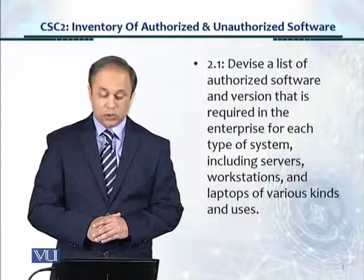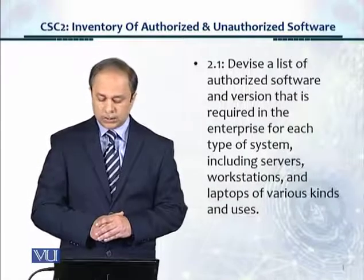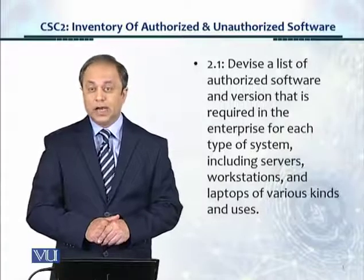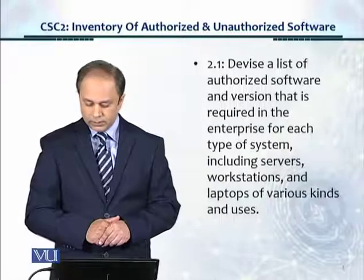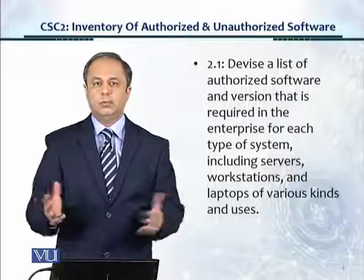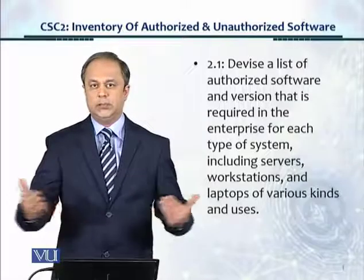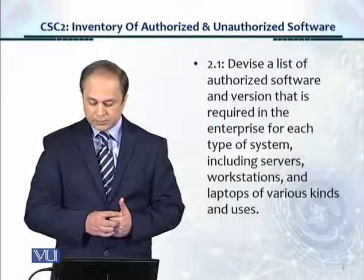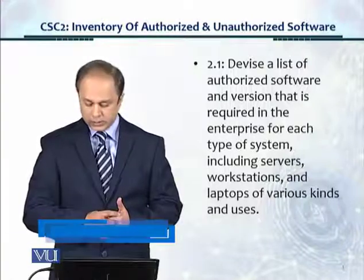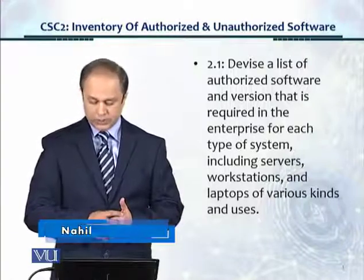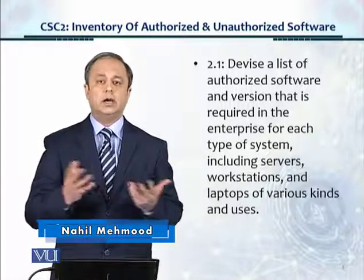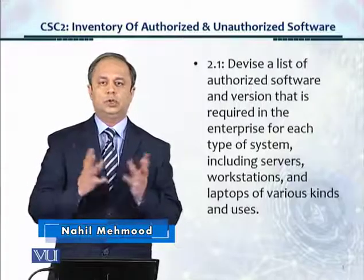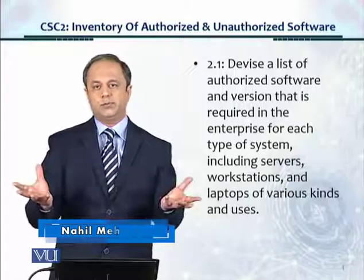Control 2.1 talks about devising a list of authorized, allowed software and version — which version is very important because versions keep changing for the software — that is required in the enterprise for each type of system, including servers, workstations and laptops of various kinds and uses. Software usually falls into three types of categories.